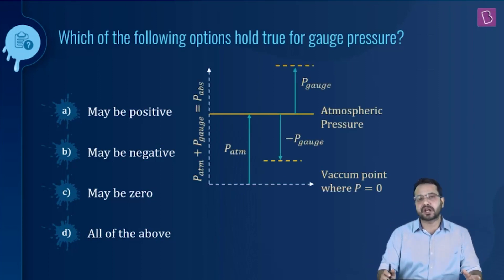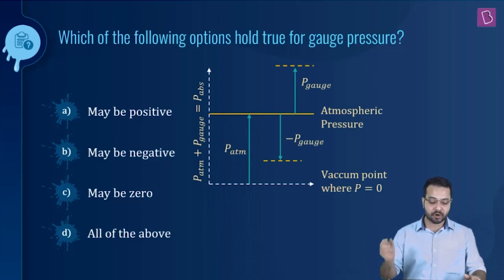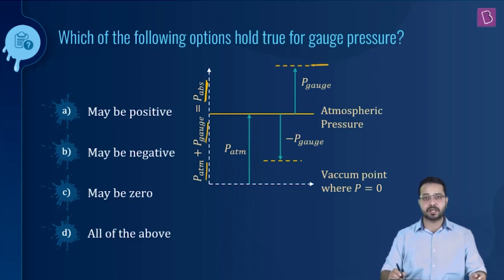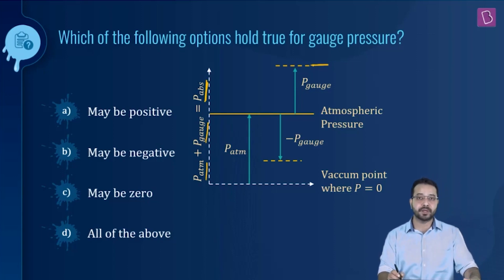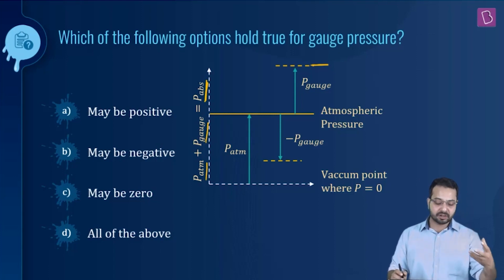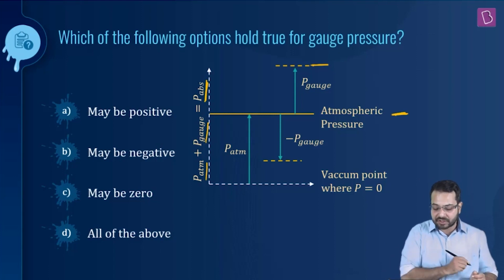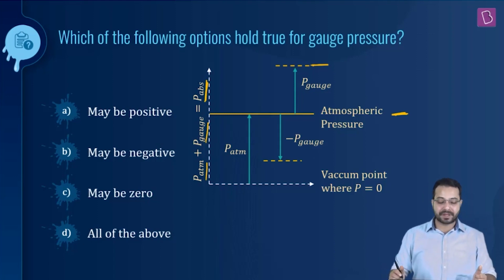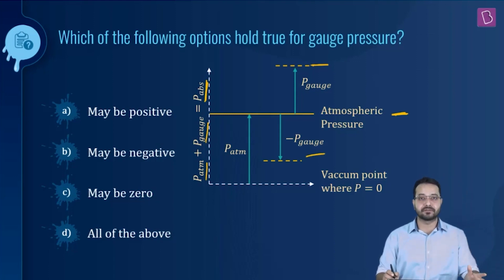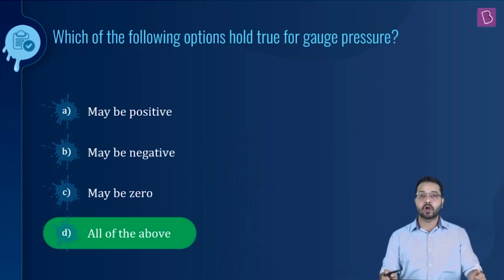Gauge pressure is measured relative to the atmospheric pressure. The absolute (total) pressure is a combination of atmospheric pressure and gauge pressure. When total pressure is greater than atmospheric, gauge pressure is positive. When they are equal, gauge pressure is zero. When absolute pressure is lower than atmospheric pressure, gauge pressure is negative. So it can assume all three values, and the correct option is all of the above.